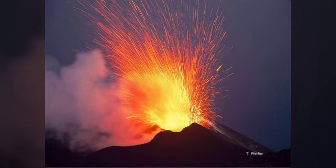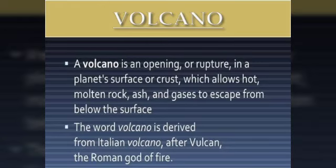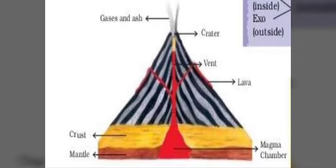Volcano is an important example of endogenic forces. It is a vent or opening in the earth's crust through which molten material erupts suddenly. The word volcano is derived from the Italian word 'volcano,' after Vulcan, the Roman god of fire. This diagram shows the volcano eruption, consisting of the magma chamber, mantle, and the crust layer, from which lava erupts from the vent.